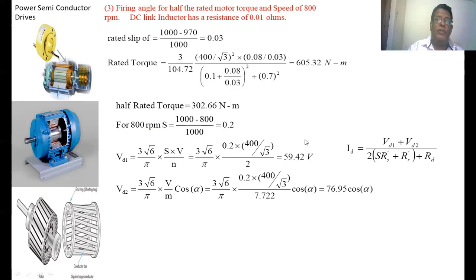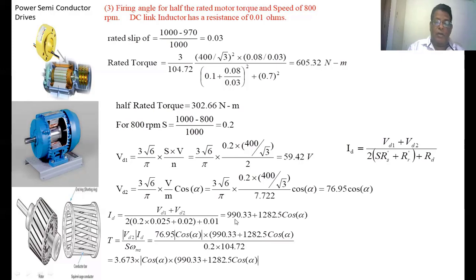In the third part, they ask us to find the firing angle. Vd2 = (3√6/π)·(S·V/m)·cos(α). Substituting all values except α, we get Vd2 = 76.95·cos(α). Id = (Vd1 + Vd2)/(2S(Rs' + Rr + Rd)). Substituting all values, we get Id = 990.33 + 1282.5·cos(α).